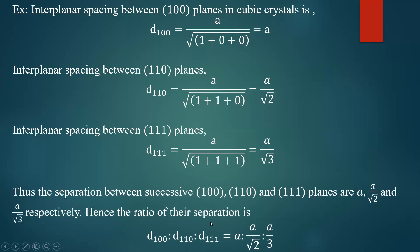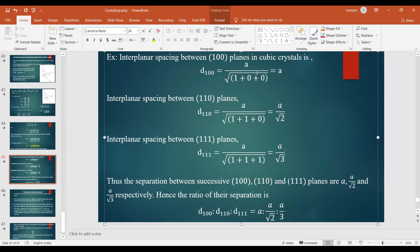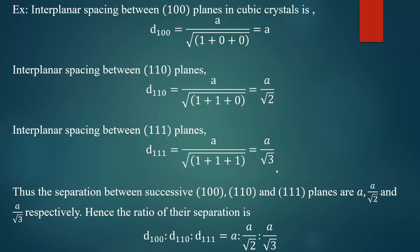The ratio of their separations is D₁₀₀ : D₁₁₀ : D₁₁₁ = a : a/√2 : a/√3. Taking out the common factor a, the ratio becomes 1 : 1/√2 : 1/√3. These are the ratios of the interplanar spacings for these particular planes in a cubic crystal system.